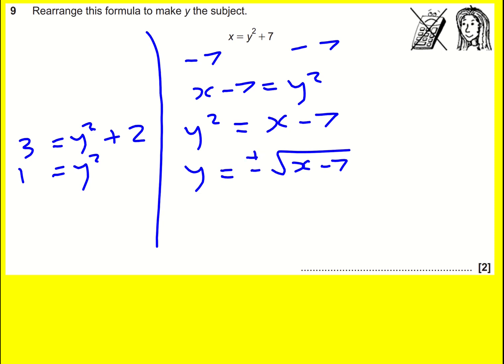If we're being super precise, then we should put a plus or minus in there because that's what you do when you take a square root. Because minus the square root would also give me x minus 7. So that is my answer.